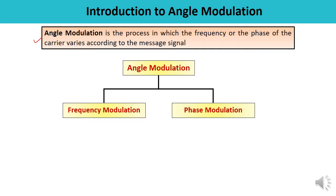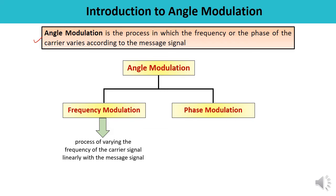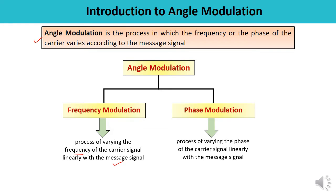Angle modulation has several advantages over amplitude modulation, such as noise reduction and more efficient use of power, but there are also a few disadvantages. In frequency modulation, the frequency of the carrier is varied linearly with the message signal. In phase modulation, the phase of the carrier signal varies according to the message signal.